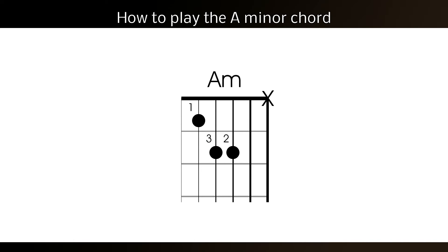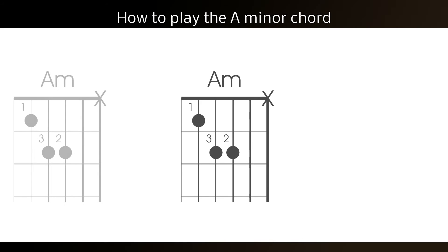If your A minor chord still sounds incorrect, you want to check each string one by one. By doing this, you'll be able to find out which strings are at fault, and this will give you a better idea of how you can correct the issues.